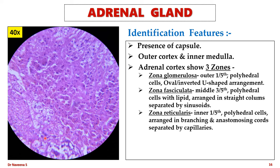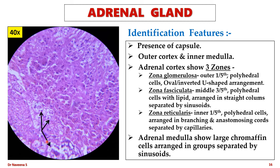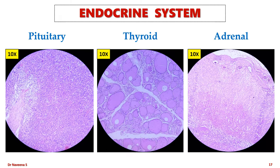The adrenal medulla contains large polyhedral cells called chromaffin cells, which contain chromaffin granules in their cytoplasm. They are arranged in groups separated by sinusoids, belong to the sympathetic system, and secrete catecholamines. To summarize the endocrine slides: pituitary is identified by clusters of cells in pars anterior, colloid-filled vesicles in pars intermedia, and nerve fibers in pars posterior; thyroid by lobules with colloid-filled follicles and parafollicular cells; adrenal gland by its capsule, three zones in the cortex, and large chromaffin cells in the medulla.